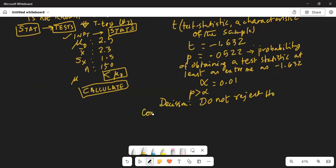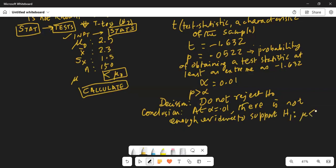Conclusion is at alpha equal to 0.01. If we do not reject h0, it stays. So, we say there is not enough evidence to support h1, which is mu less than 2.5.